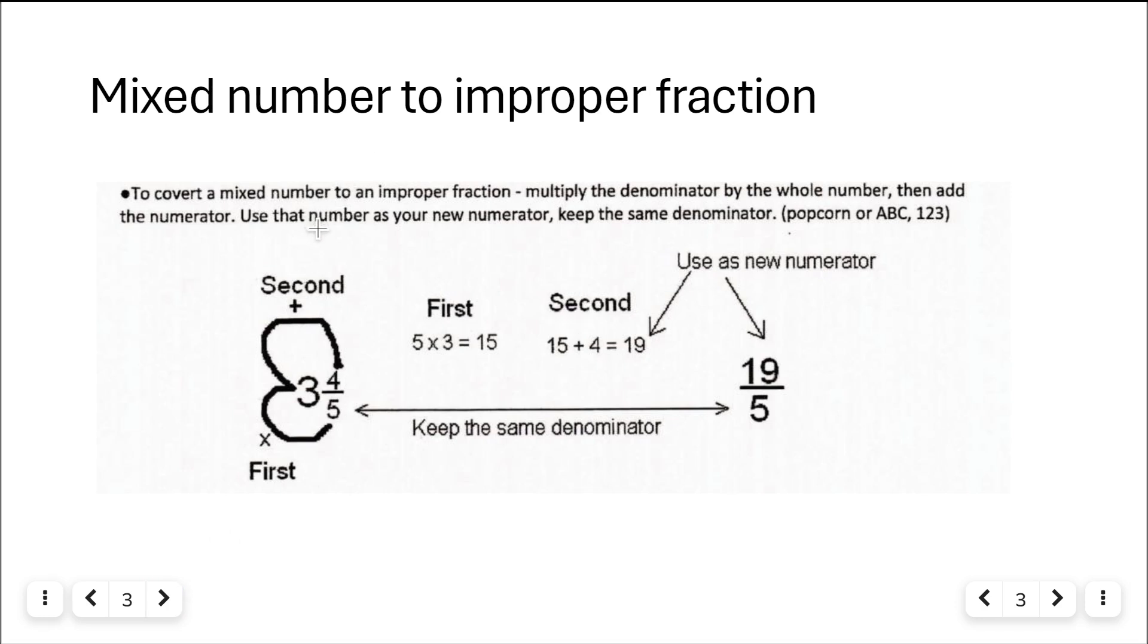Okay, to go from a mixed number to an improper fraction, you multiply the denominator by the whole number and then add the numerator. If I had three and four-fifths, we do three times five is 15 plus 4, 19. So that's 19, and then we keep the denominator, 19 over 5. That would be my improper fraction. You can see the numerator is bigger than the denominator, it's improper. Okay, that's how you convert from a mixed number to an improper fraction.